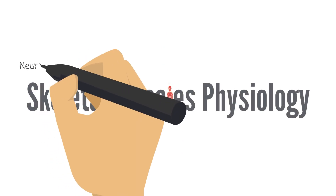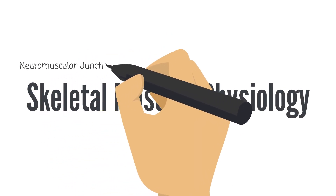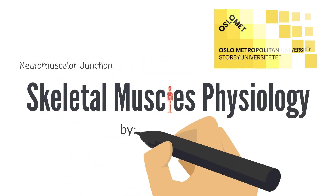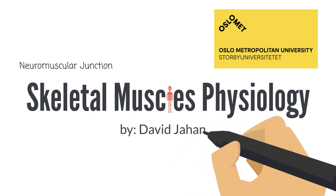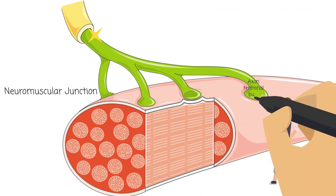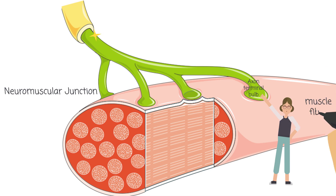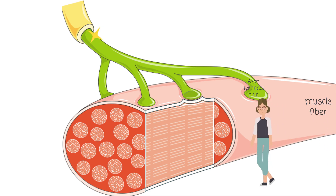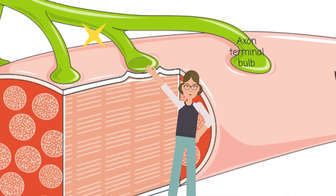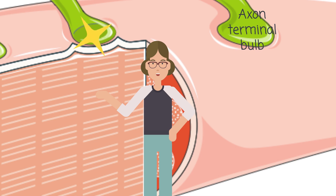In this lecture we look at neuromuscular junction in skeletal muscles. The neuromuscular junction is the area where an axon's terminal bulb meets a muscle fiber. Let's see what will happen when an action potential reaches the neuromuscular junction.